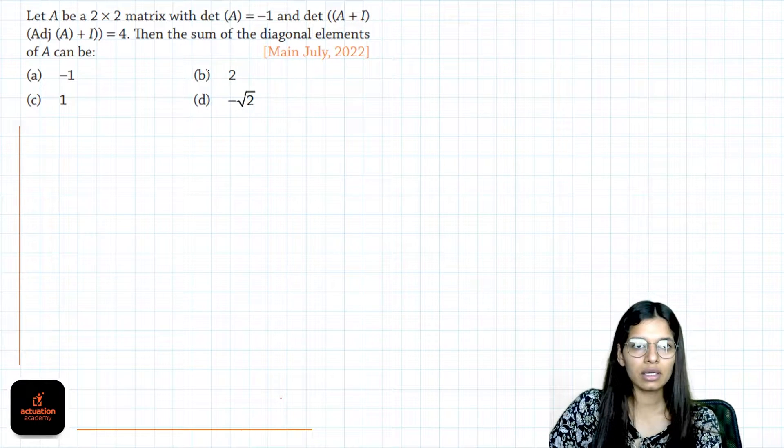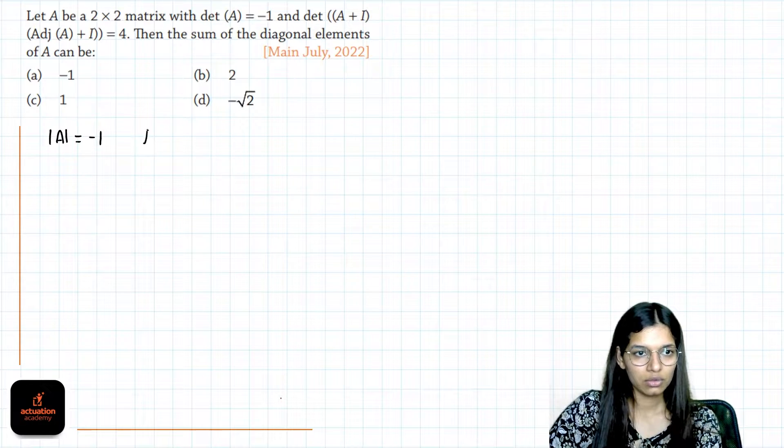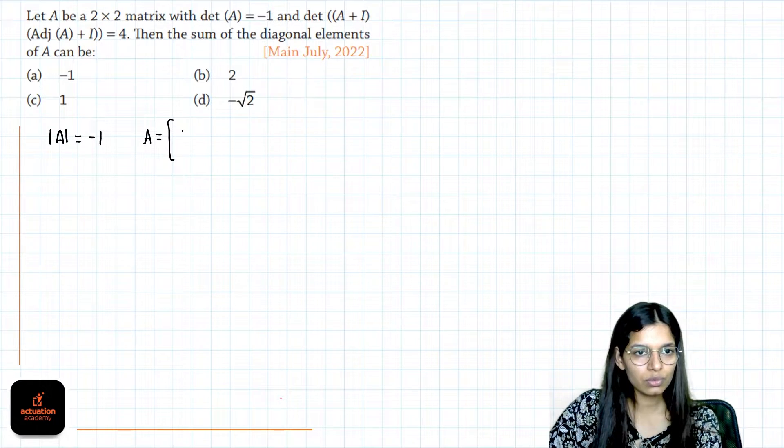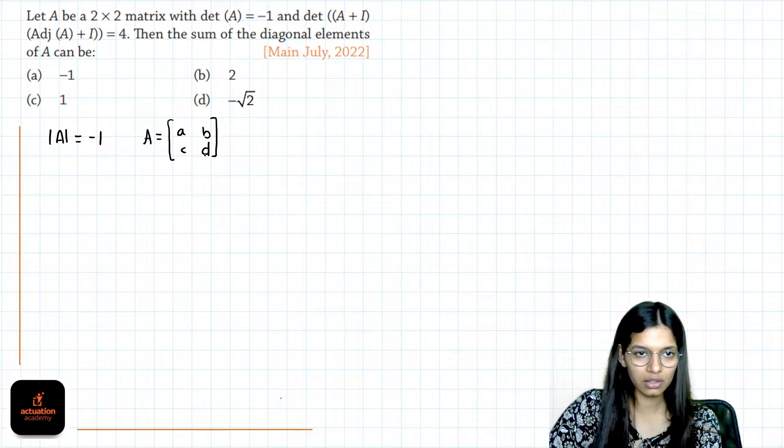So we need to find what are the diagonal elements of A. Given that determinant of A is minus 1, so A is a 2 cross 2 matrix, assume a, b, c and d.